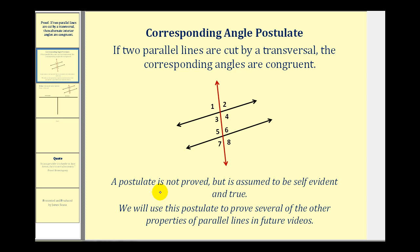Remember, a postulate is not proved — it is assumed to be true. So we can use this to prove the given theorem. Let's take a look at a two-column proof.